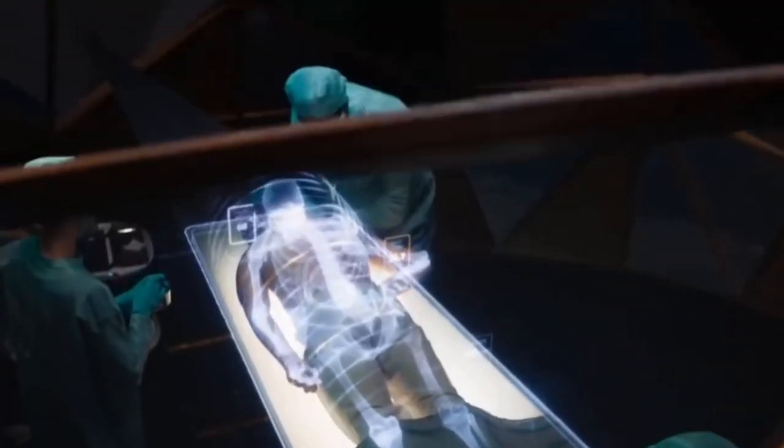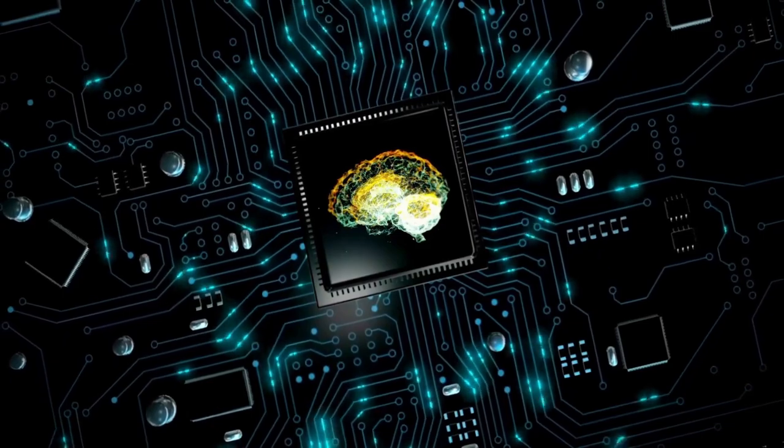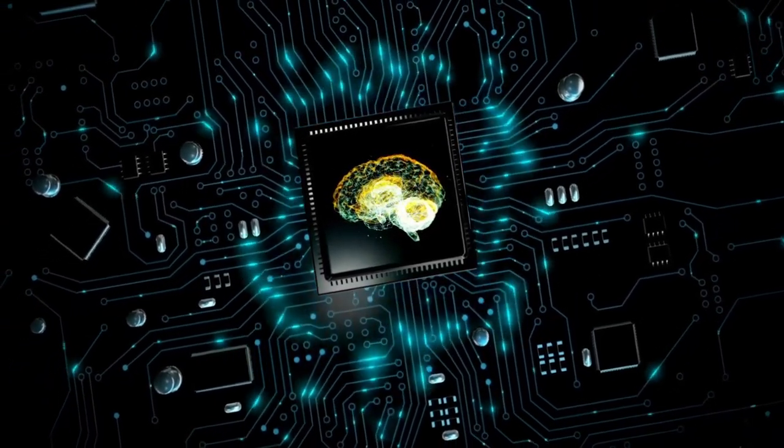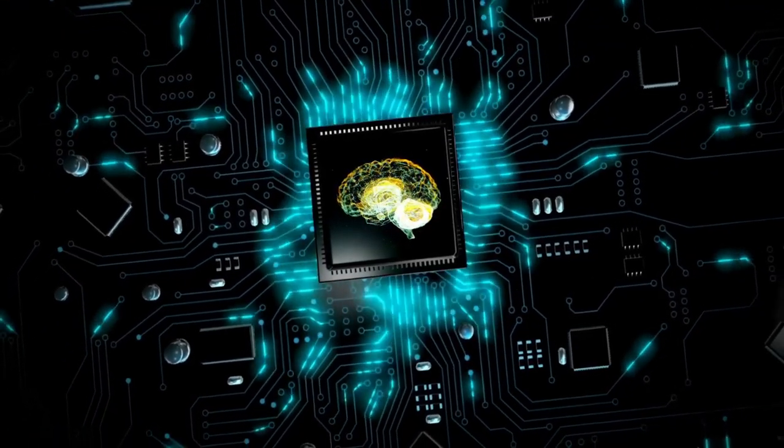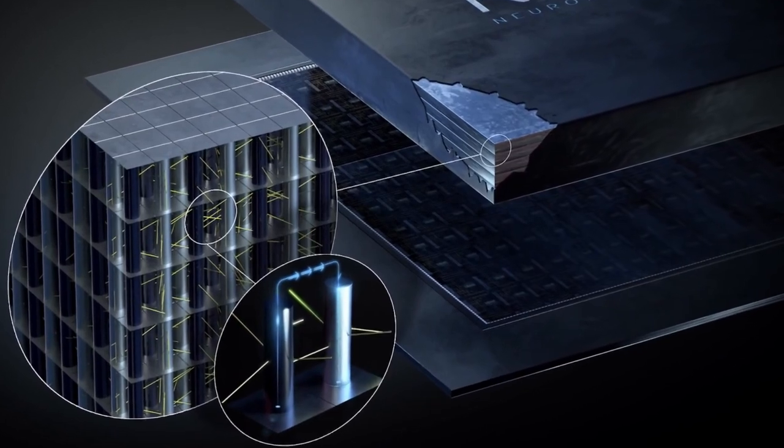Artificial neurons on silicon chips are a crucial component of modern AI systems. These neurons mimic the function of biological neurons found in the human brain, allowing for fast and efficient processing of information.